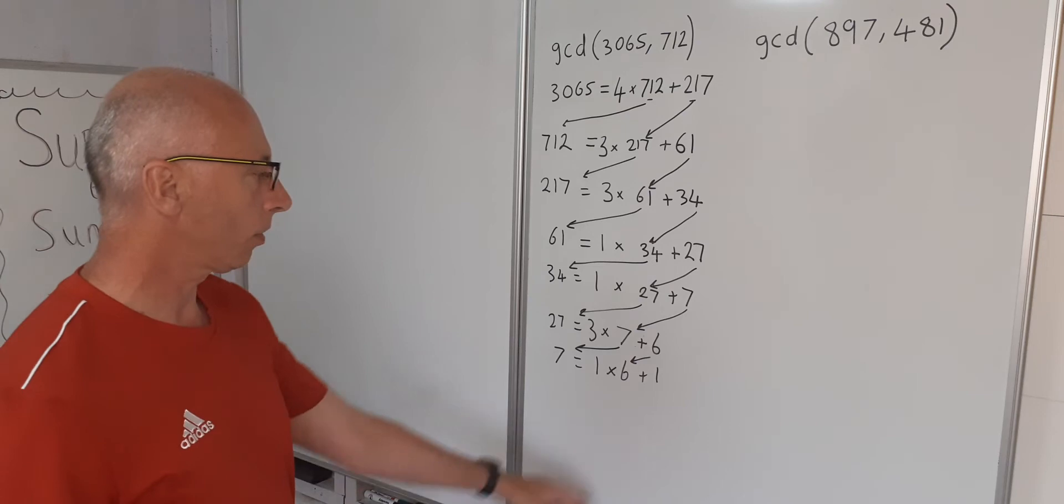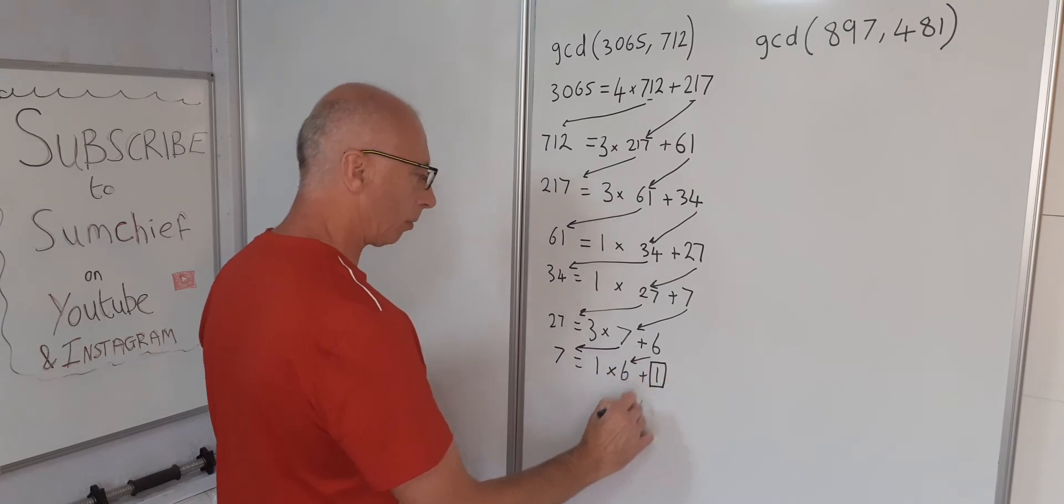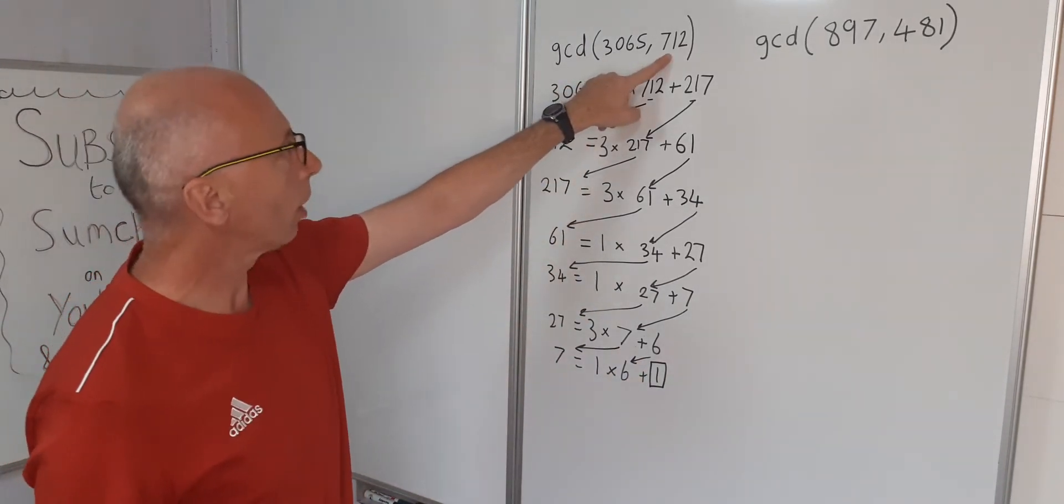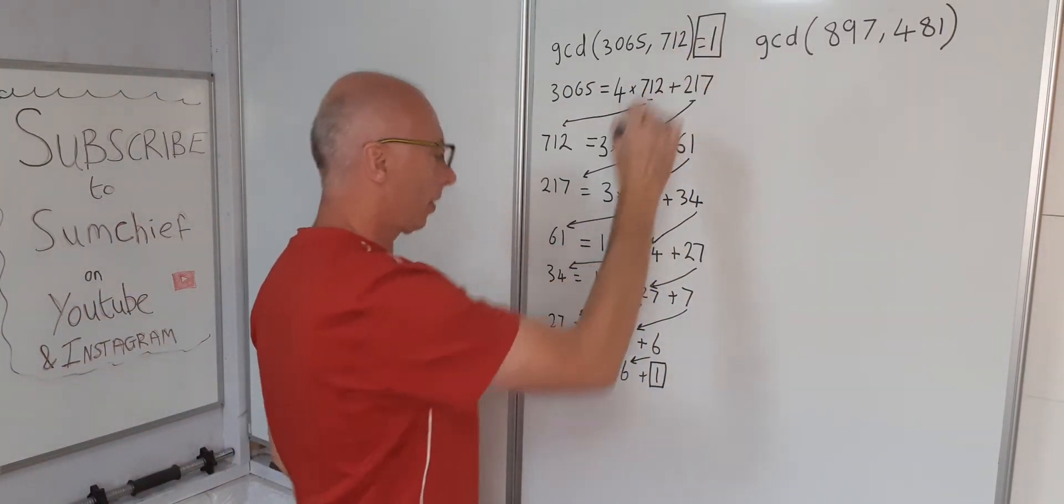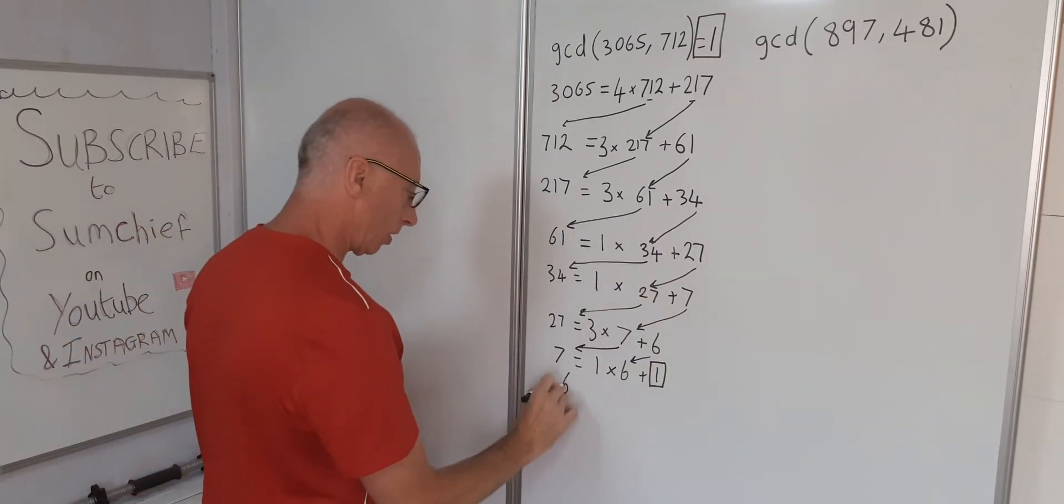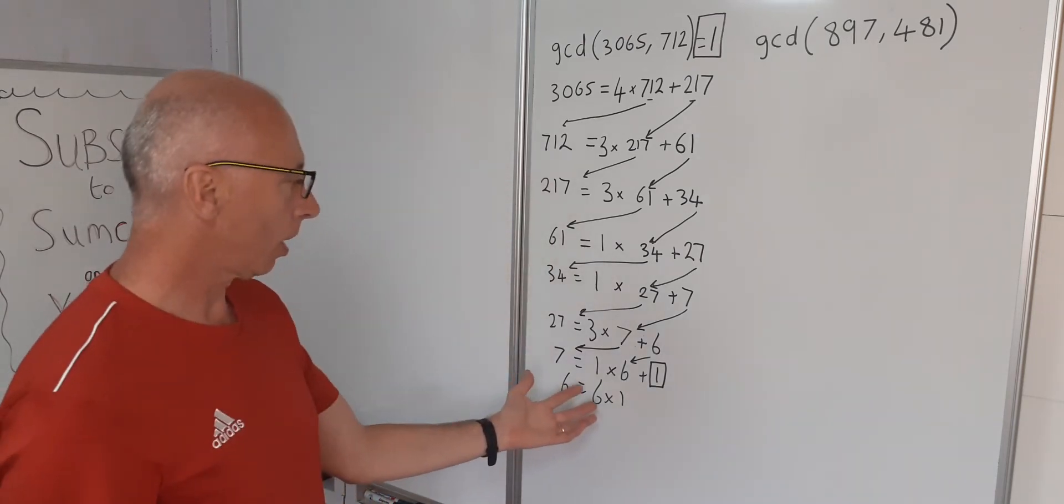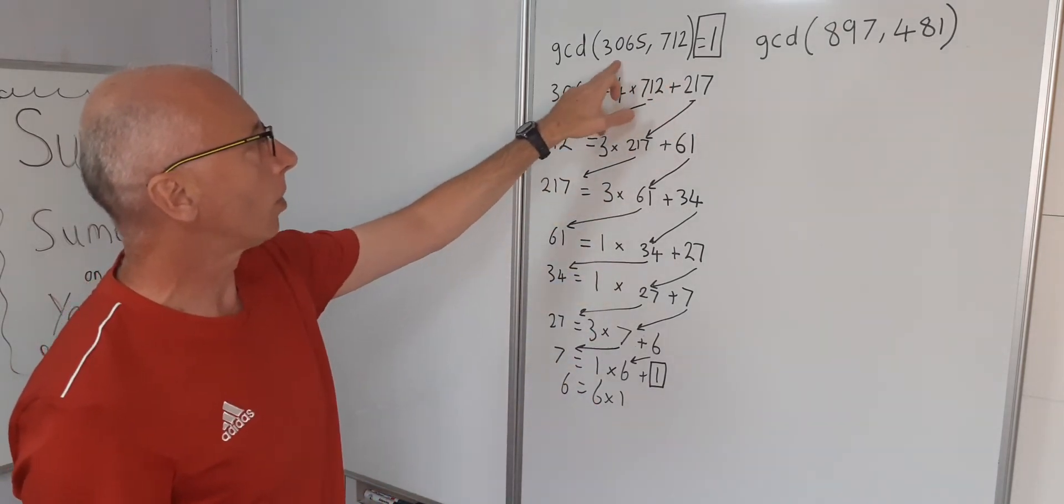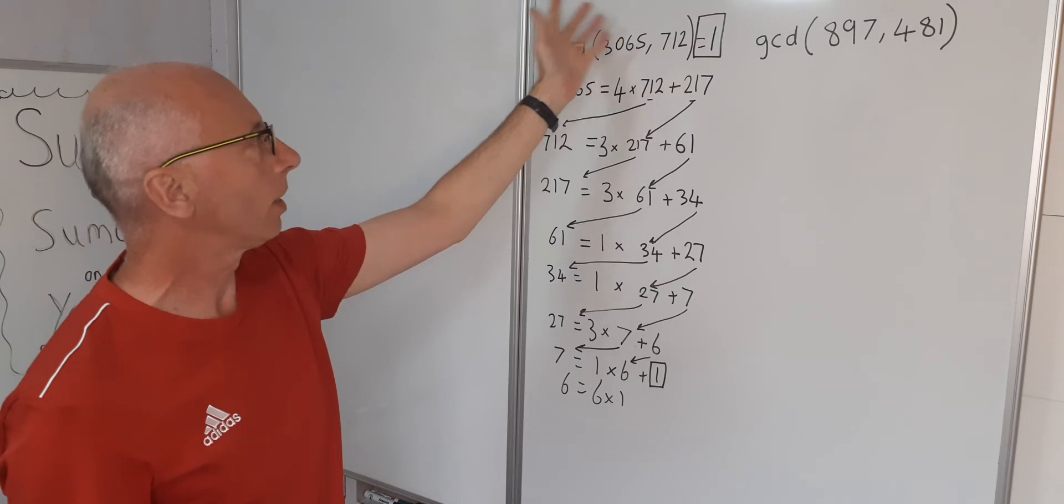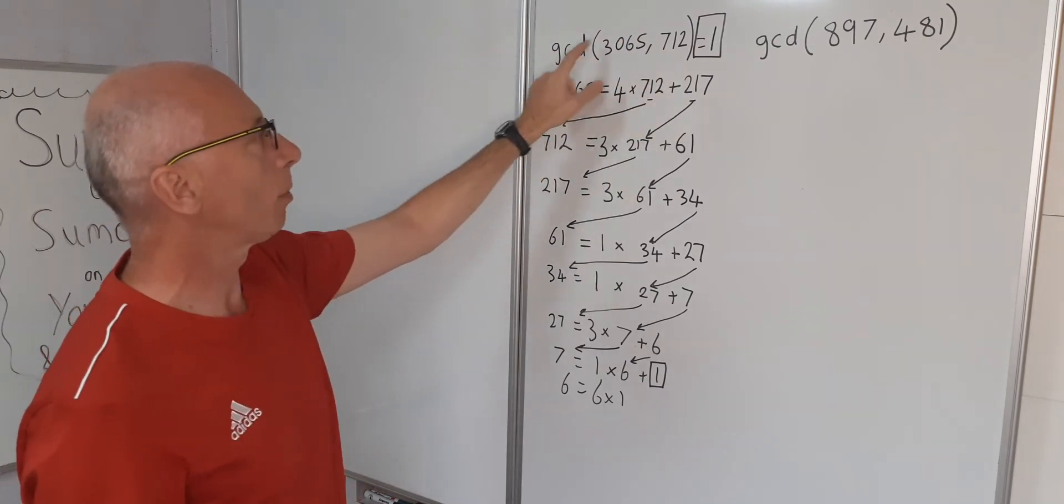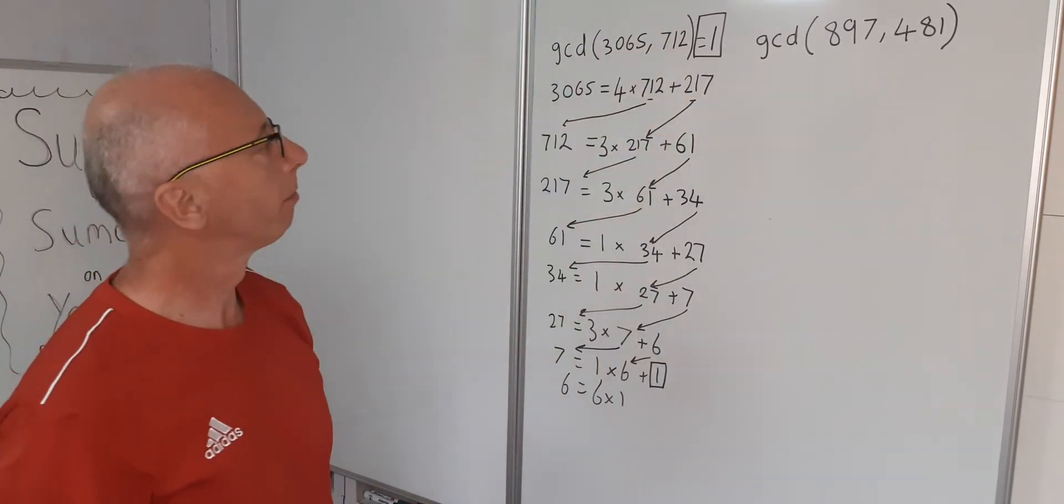Okay, so now we've got a 1 here. That 1 will tell us that this is relatively co-prime. Therefore the greatest common divisor of these is going to be 1. Whenever you get a 1 at the end, the greatest common divisor is 1. So these are relatively co-prime. The only greatest common divisor is 1. After all that, there is no greatest common divisor except 1.